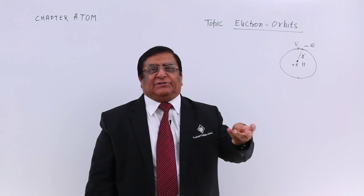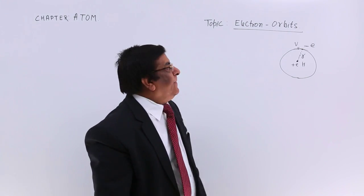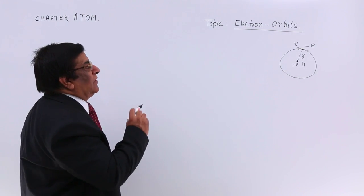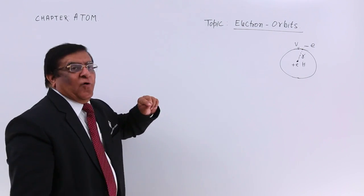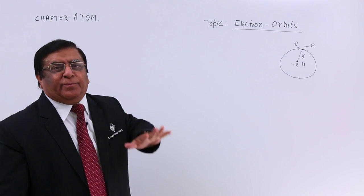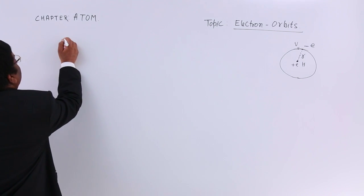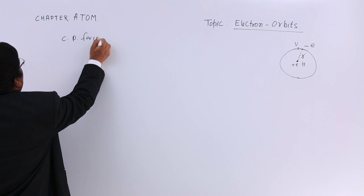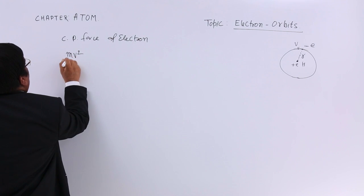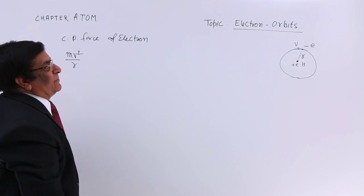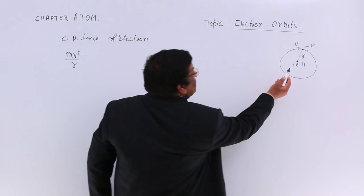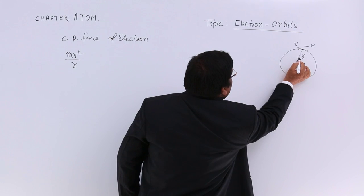Let us calculate kinetic energy, potential energy, and the total energy. This is an example of circular motion where centripetal force is involved, without which circular motion is not possible. We know the centripetal force of the electron is mv²/r. The electrostatic attraction provides this centripetal force, pulling the electron inward.